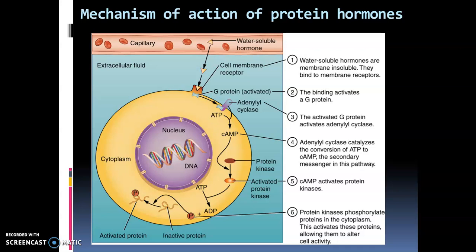Now let us see the action of protein hormones. Protein hormones are not lipid soluble — they are water soluble. Because they are not lipid soluble, they cannot diffuse through the plasma membrane of the cell and cannot enter into the cytoplasm. Protein hormones are also carried by the blood, and when they reach the target organ, they bind with extracellular or plasma membrane-bound receptors located on the surface of the plasma membrane of the target cell.